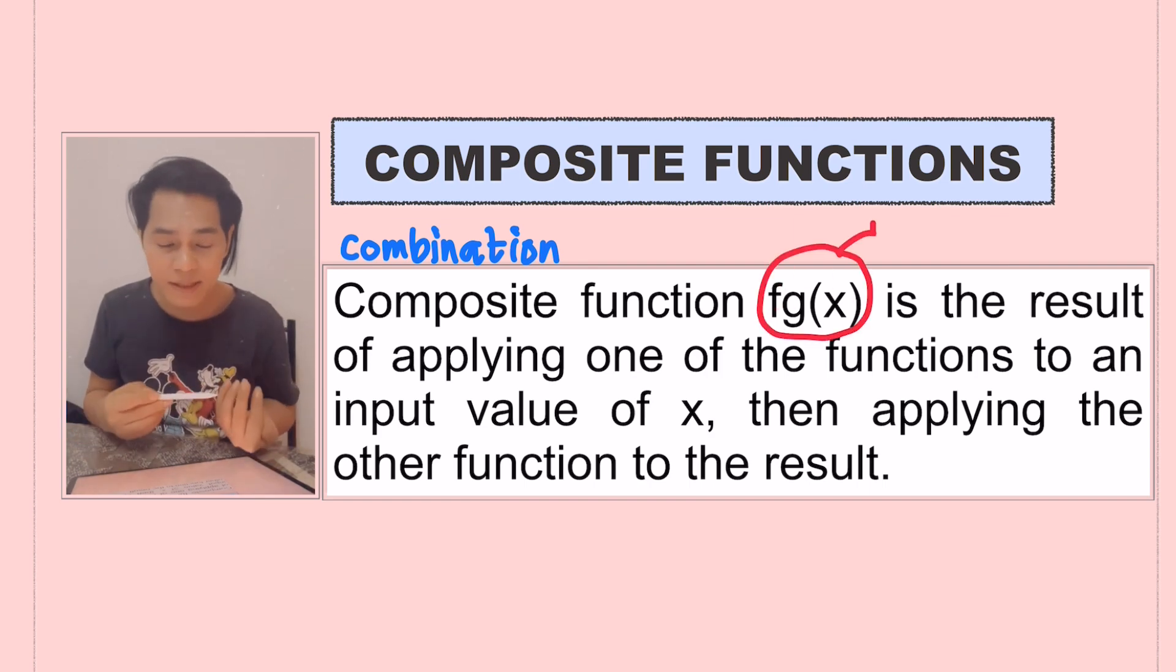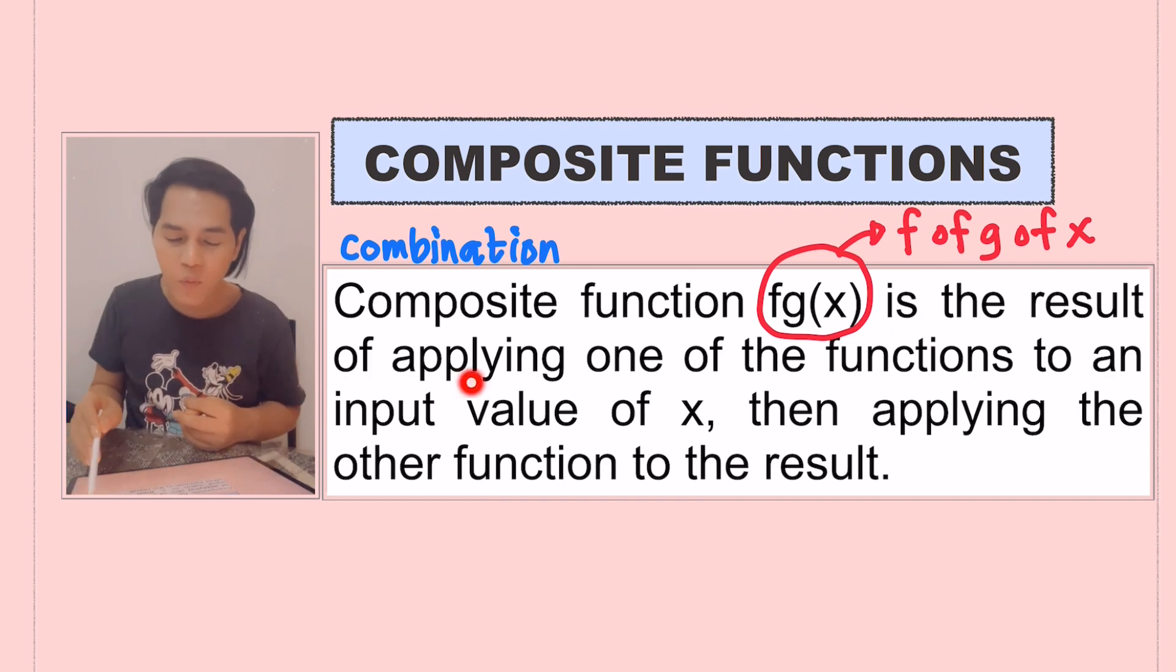So what do you mean by this? A composite function is the result of applying one of the functions to an input value of x and then applying the other function to the result. In order to understand this definition, I'll give an example here.